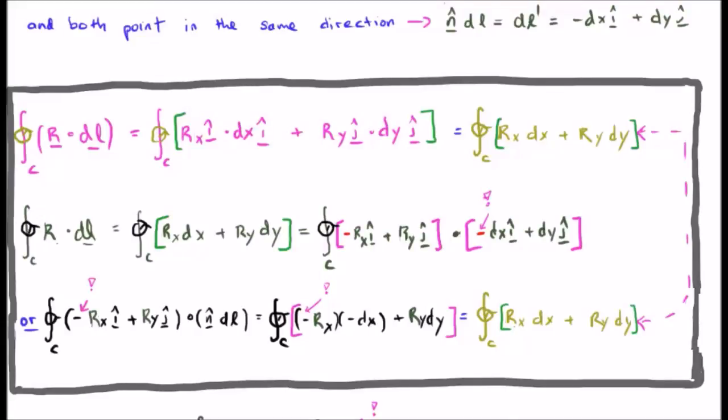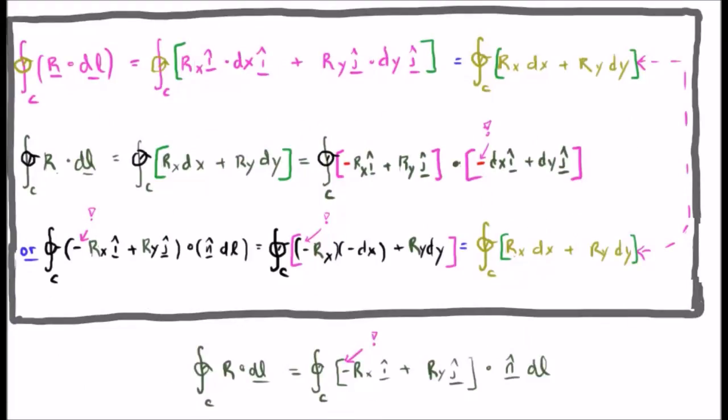The point here is that we have two different dot products which will give us the same result, and this means we can rewrite our original closed line integral.